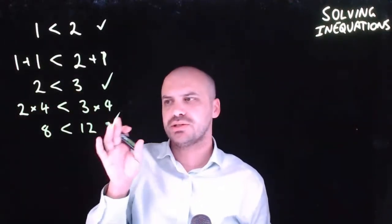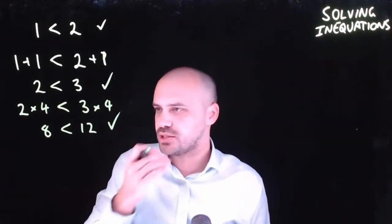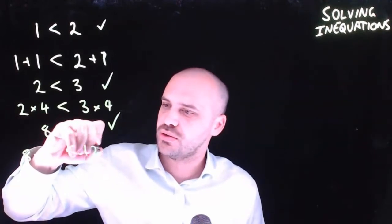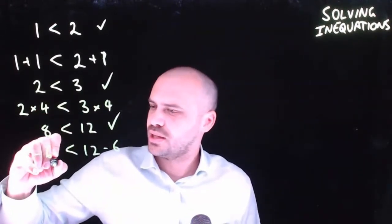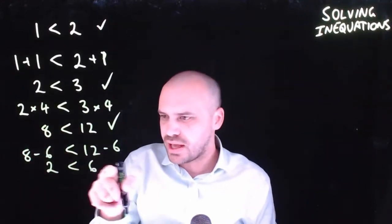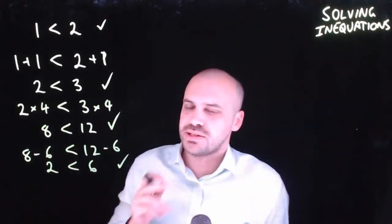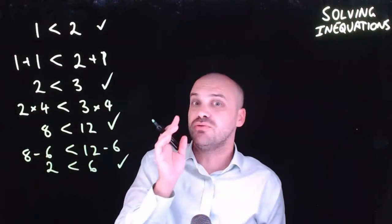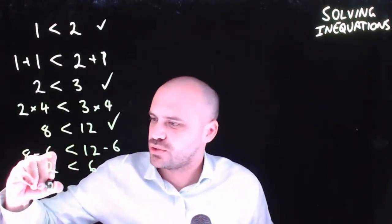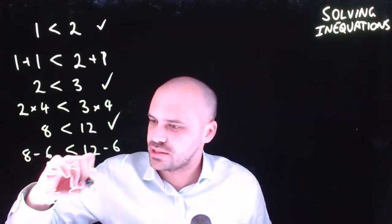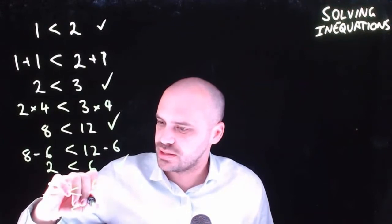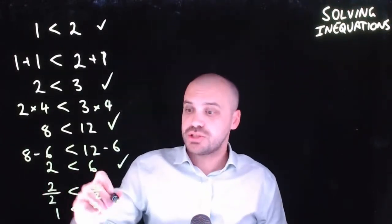Let's subtract from both sides: 8 minus 6 is less than 12 minus 6, giving 2 is less than 6 — still true. And let's divide both sides by 2: 2 divided by 2 is less than 6 divided by 2, which is 1 is less than 3 — still true. So all the operations seem to work.